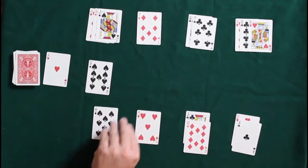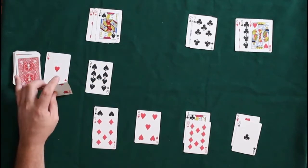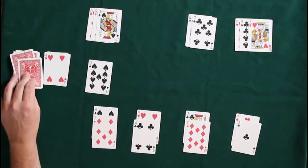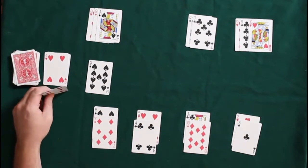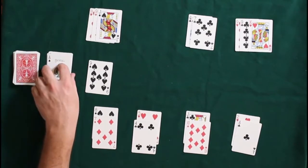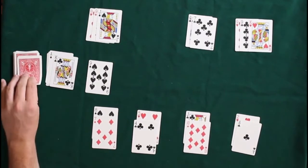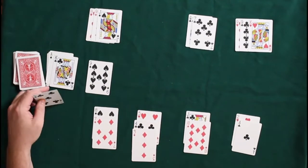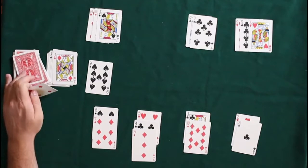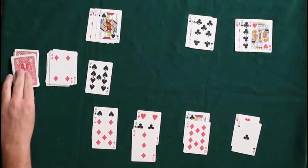And on the tableau, you of course will build down off-color, and you can move entire foundations onto other foundations if they fit, not necessarily just one card at a time. This is an odds against game, meaning it is possible to lose, and more often than not you probably will lose, but once you've won this game once, you'll understand the simple strategy, and you'll win very much often if you follow it each time.